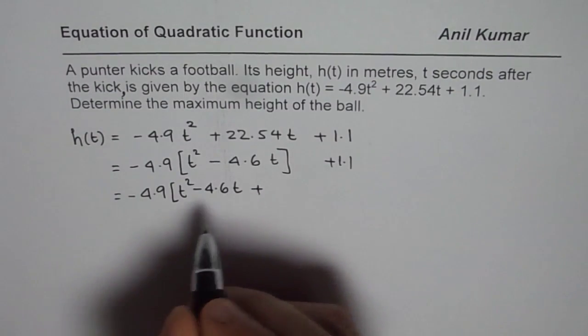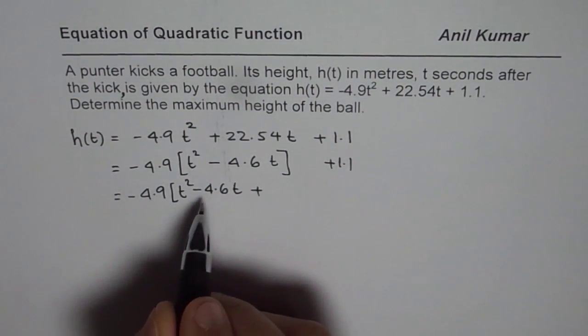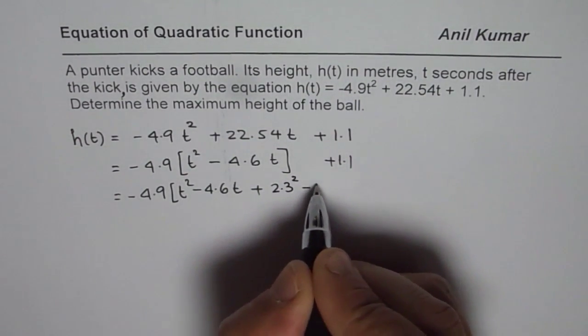Next step is, take half of 4.6. Now, half of 4.6 is 2.3. Add and subtract its square. That's the next step.